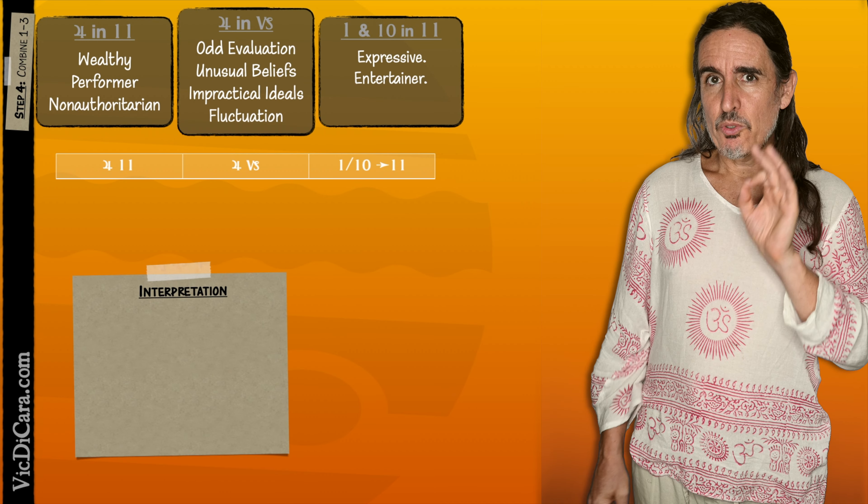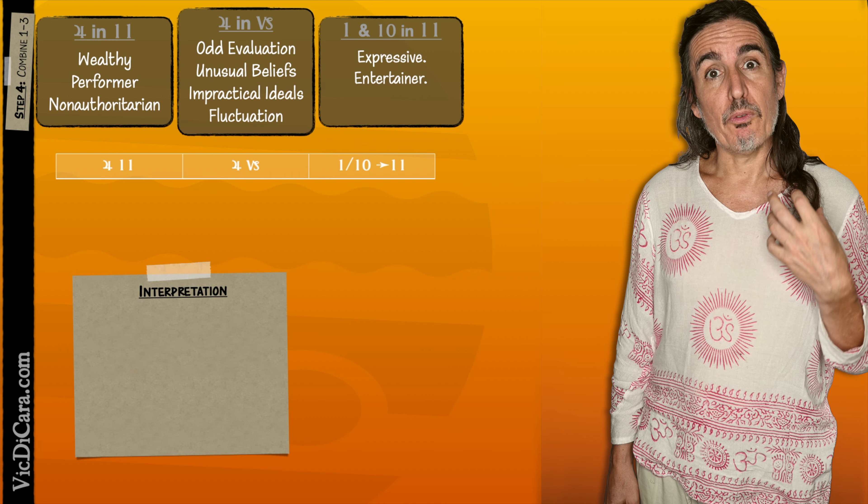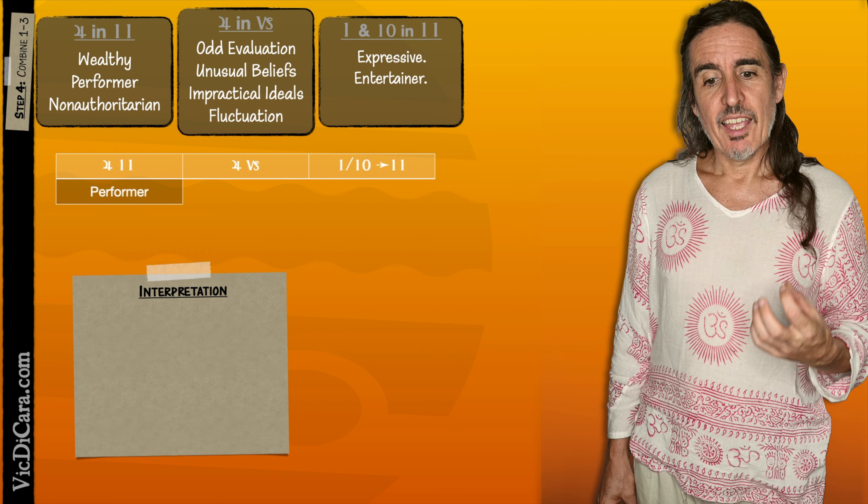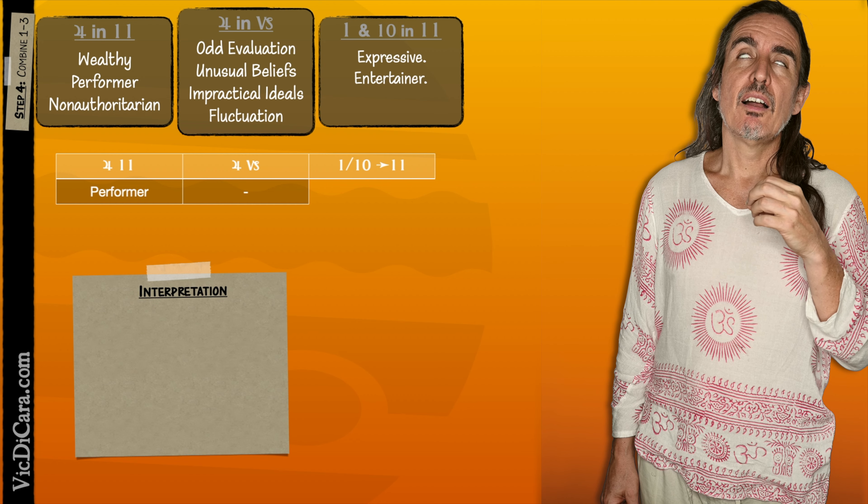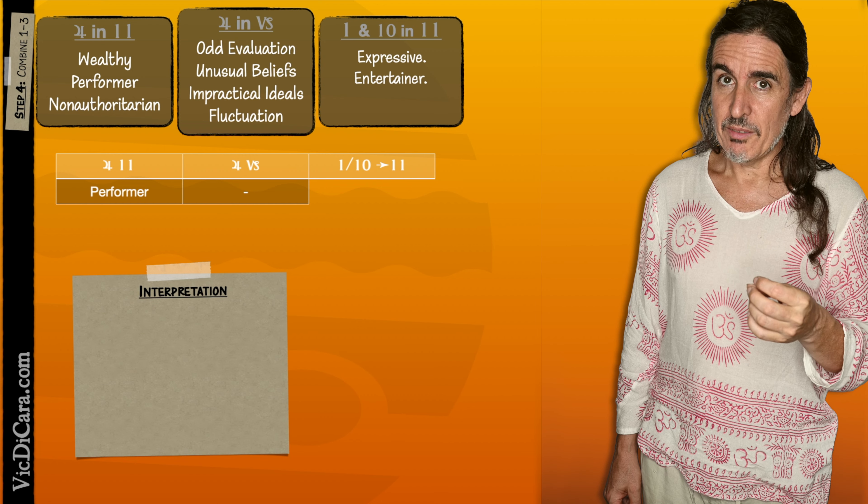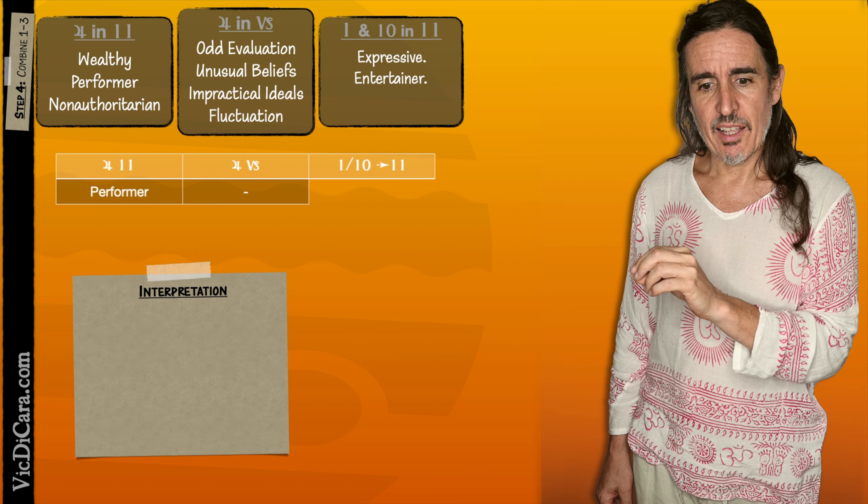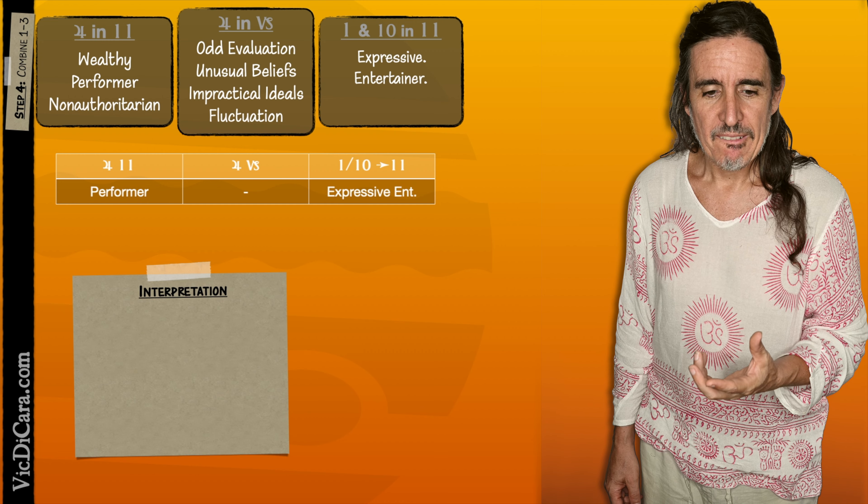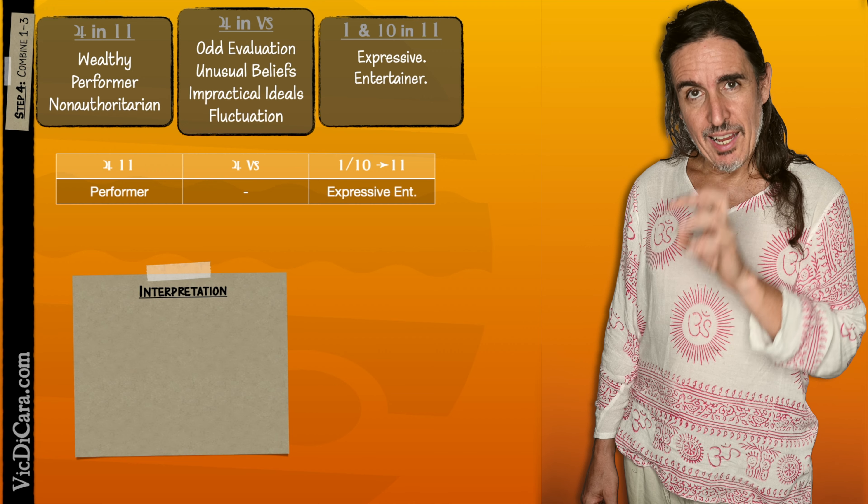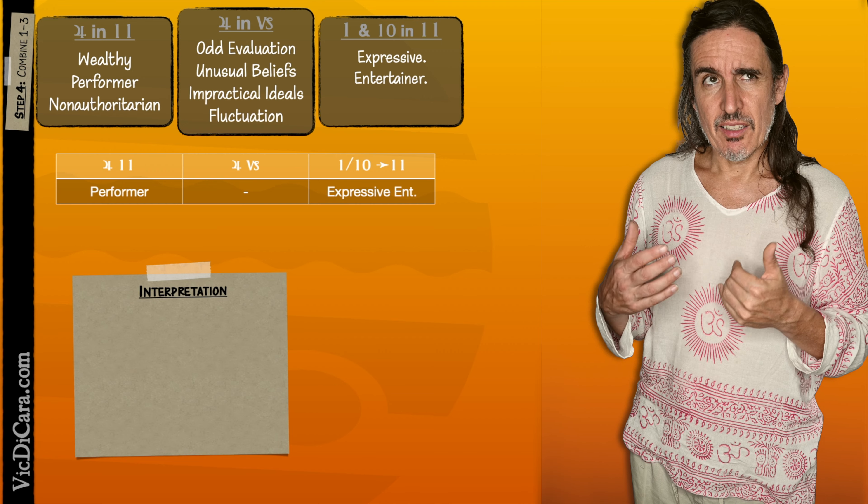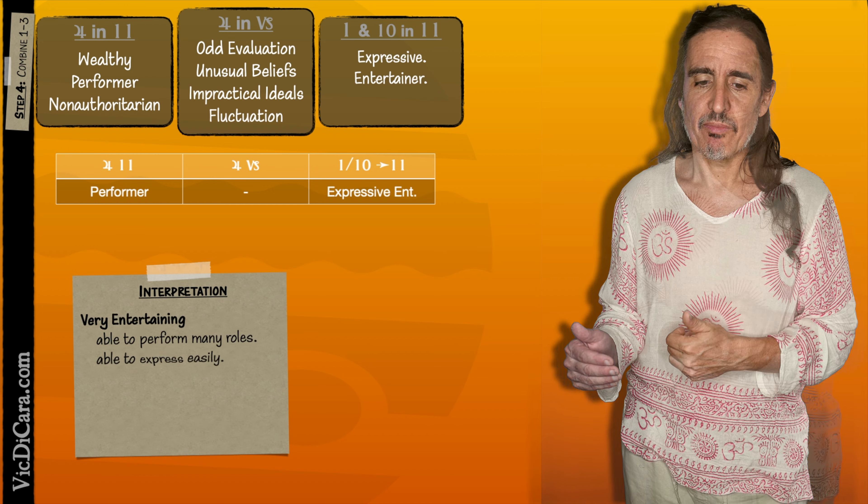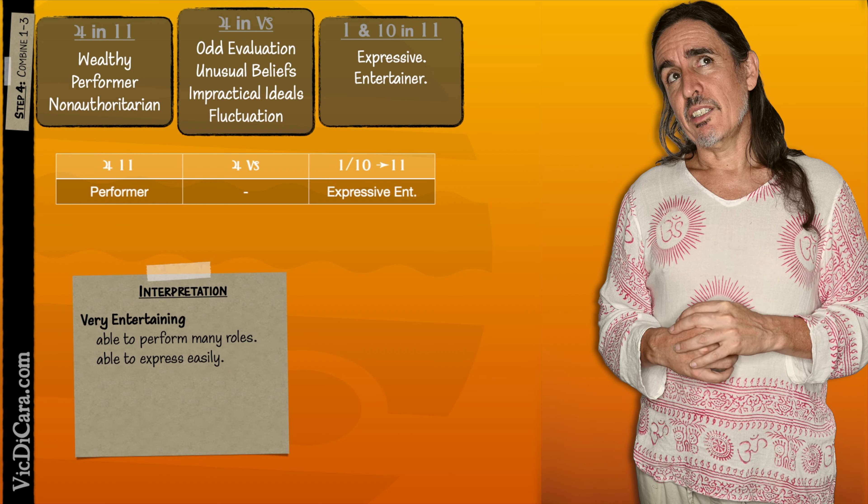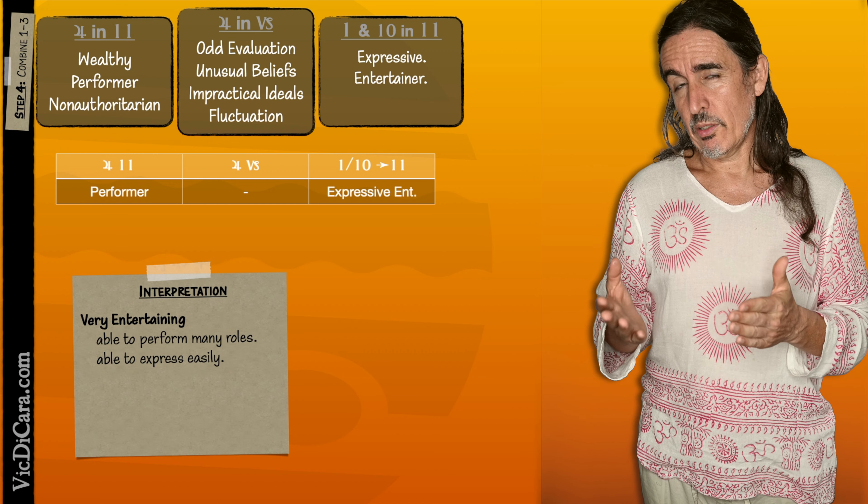Now that we know all this, we can really understand what Jupiter in the 11th house in Capricorn symbolizes. For example, Jupiter in the 11th, we said there was a performance tendency. And that is going to be reinforced by the 1st and 10th Lords being in the 11th house, giving that expressiveness and making one a natural entertainer. So when Jupiter is in Capricorn in the 11th house, the native is very entertaining. They can express themselves easily. They can easily even choose what they will express.